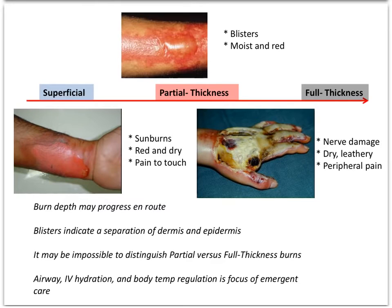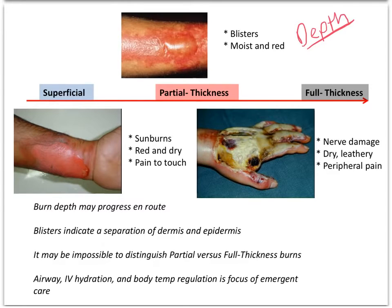Whenever you see a burn victim, the first thing you recognize is the depth of that burn. You may not have realized that that's what you're looking at, but that's essentially what you're seeing — the depth of their burn injury. The way we know that is by their signs and symptoms. We have superficial, partial thickness, and full thickness. Those are the three categories that we use to classify burn depth.